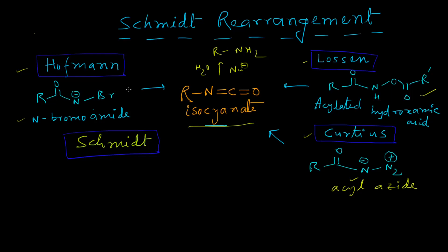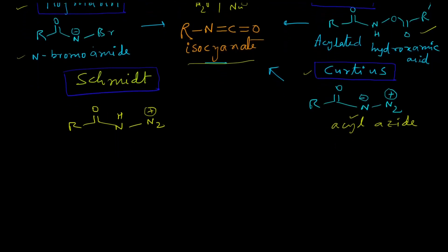The amine product has one carbon less than the starting material. In the Schmidt rearrangement, the starting material is quite similar to that in the Curtius rearrangement — it is basically the protonated form of the acyl-azide. Why it is protonated will be discussed during the reaction mechanism. First, let us consider how it is made.